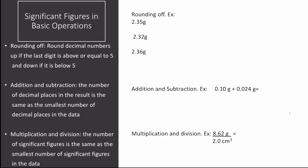Let's talk about significant figures in basic operations. I will cover each one of these operations and do examples accordingly. The first one is rounding off. You round decimal numbers up if the last digit is above or equal to five, and down if it is below five. Let's say in the example here, I want the final answer to have two significant figures. The first number is 2.35 grams. Notice that I have units in each one of the numbers in these examples, because it only makes sense to analyze significant figures in numbers that have been measured.